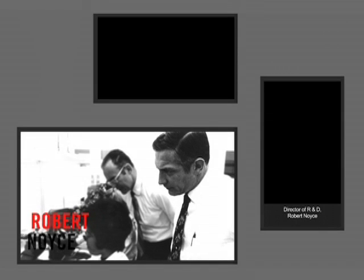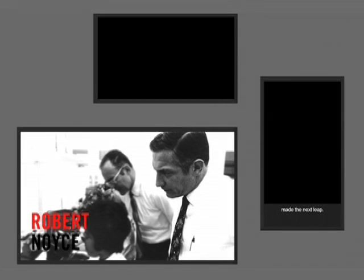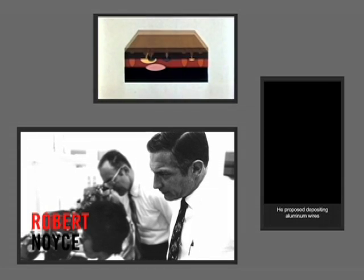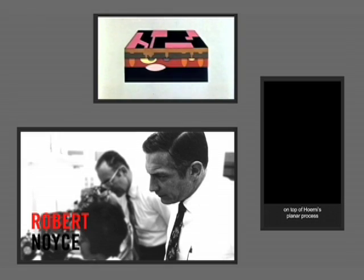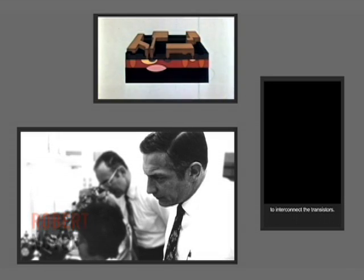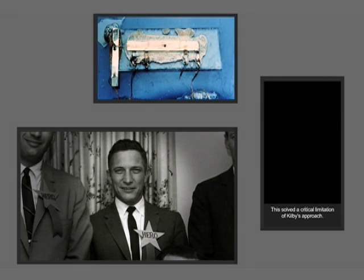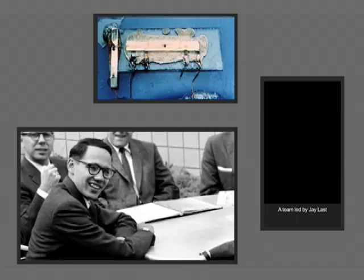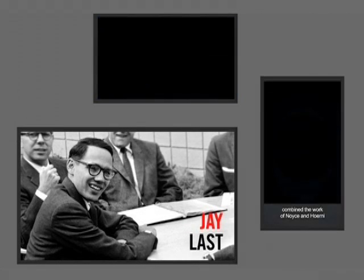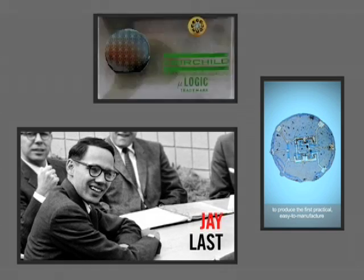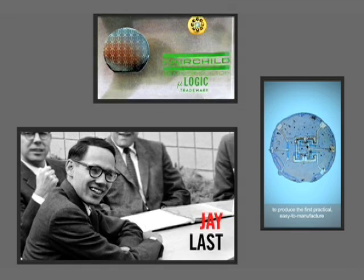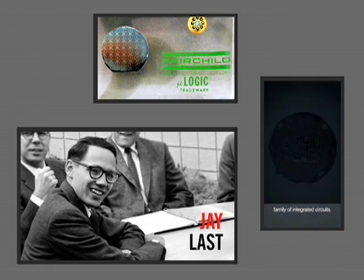Director of R&D Robert Noyce made the next leap. He proposed depositing aluminum wires on top of Hoerni's planar process to interconnect the transistors. This solved a critical limitation of Kilby's approach. A team led by Jay Last combined the work of Noyce and Hoerni to produce the first practical, easy-to-manufacture family of integrated circuits.